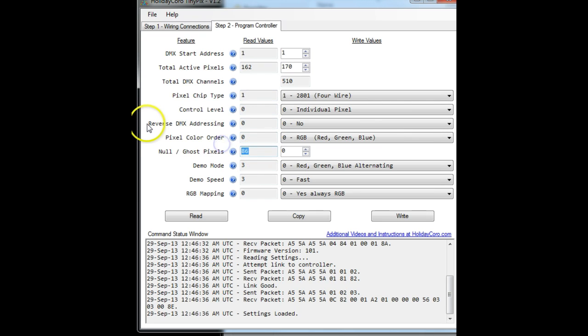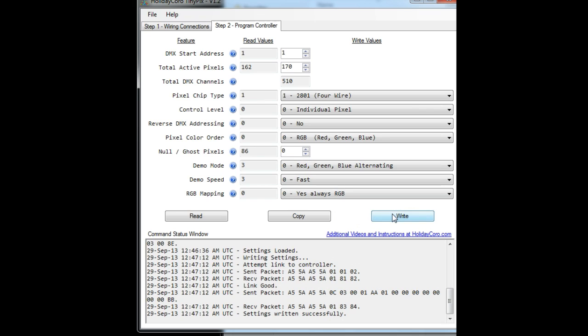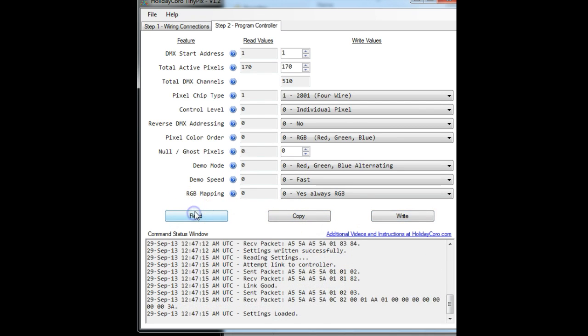We're going to set this up for no ghost pixels here, and we're also going to be setting up for a test mode. Now in this particular case, we have red, green, and blue alternating. We're going to write those, read them back, copy them over, and you can see we've got 170 pixels, four wire, 2801, and we've got a red, green, and blue alternating test sequence. Now that means that we're ready to go.